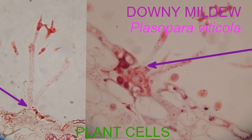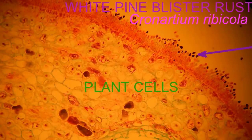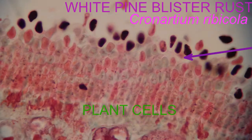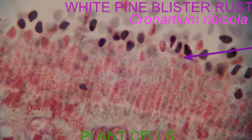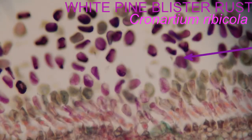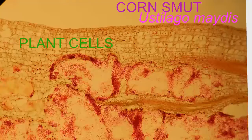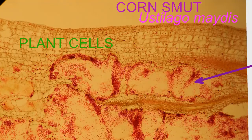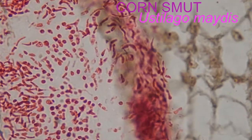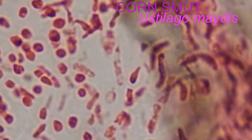Individual species of fungi can infect specific species of plants. Some fungi can have more than one host, and some can have very complex life cycles, even using multiple kinds of spores at different points in their life cycles, often with different hosts.